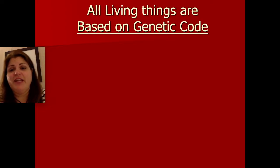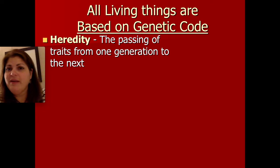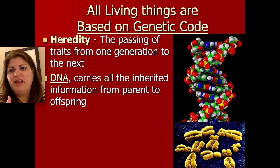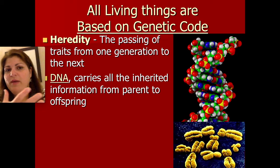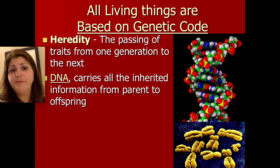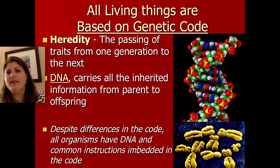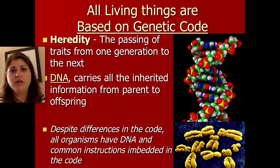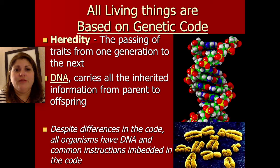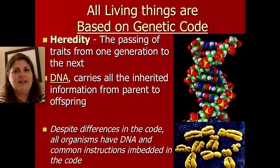Now we're getting into some characteristics that are almost unique to life. The next one is that all living things are based on a genetic code. We're talking about heredity — the idea of passing on traits from one generation to the next — and the way those traits are passed on is through a molecule known as DNA. DNA is a molecule that holds the code for genes. Whether we're talking about a person, a maple tree, or a bacteria cell, if we analyze DNA there are profound similarities shared by all living things. Our DNA is all made up of the same repeating units. It's also worth noting that just about everything that has DNA is alive.